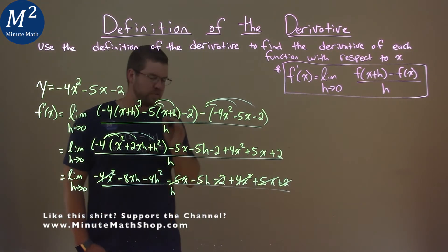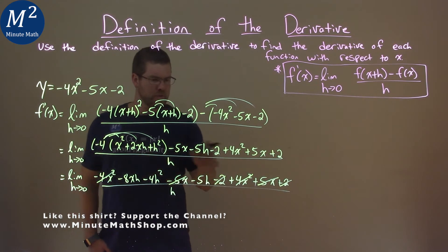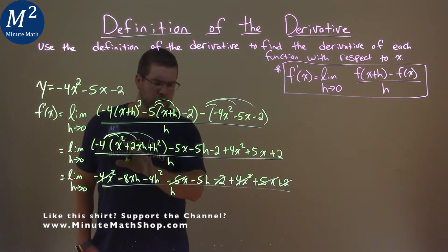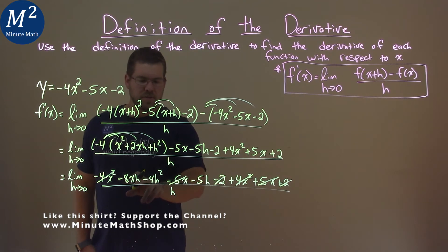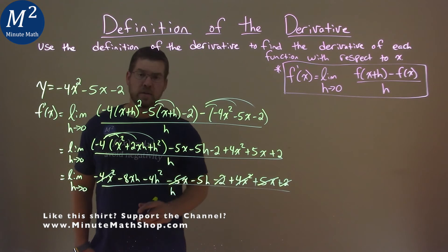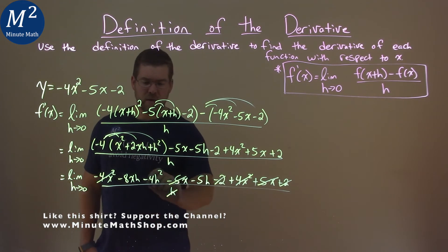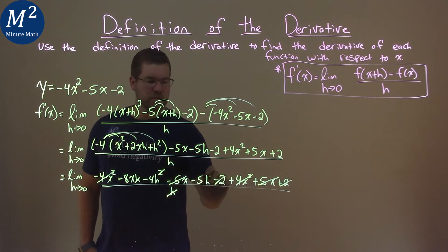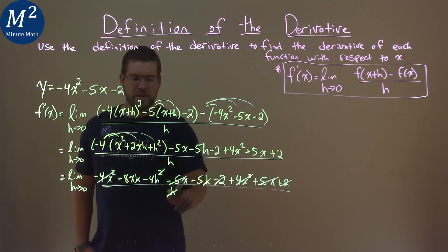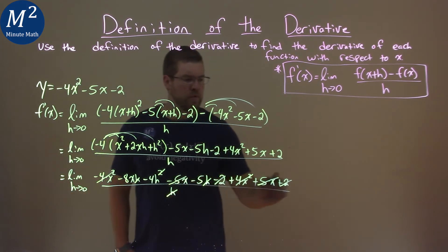Now, watch this cool little thing. Let's take your time here. If you want to pause, take a look at this. All that's left is negative 8xh minus 4h squared minus 5h. There's h in the denominator. If we cancel that out, take one h out of every term here. And h is now out of the denominator.